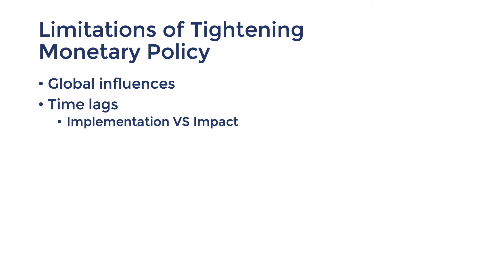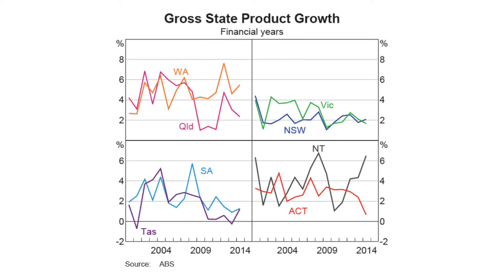Another limitation of tightening monetary policy is that it can be described as a blunt instrument. This means that monetary policy cannot target specific states or industries. Throughout the mining boom, Australia was described as a two-speed economy, as economic growth and inflation was mostly led by larger states like New South Wales, Victoria, and Queensland, as well as mining states like Western Australia and the Northern Territory. However, South Australia and Tasmania were not experiencing high growth, yet they still experienced the impacts of contractionary monetary policy anyway.